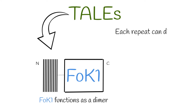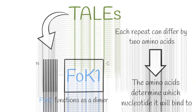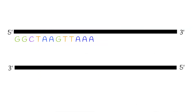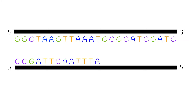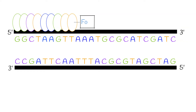Each of the repeats in the TALE DNA-binding domain can differ by two amino acids, which determines which nucleotide it will bind to. We start off with a DNA sequence. TALEs are bonded together to make a protein that is bound to specific nucleotides within the DNA sequence. The TALE effector repeats that bind to a specific half site on the DNA are fused to a FokI nuclease domain.